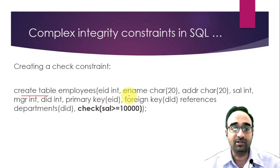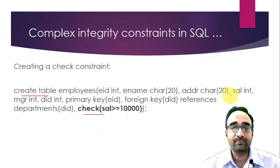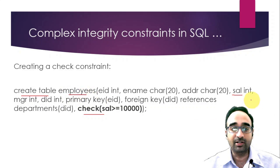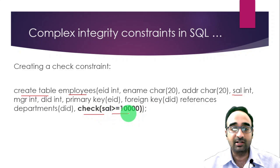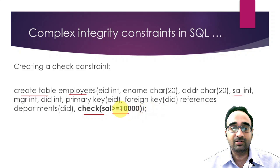When you are creating the table, you can add the CHECK keyword in your SQL query. Here we have a salary column in an employees table. The requirement is that the salary of any employee should not be less than 10,000, so we check for salary greater than or equal to 10,000. This constraint is enforced on the DBMS side and has nothing to do with the application.